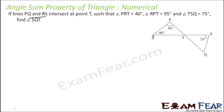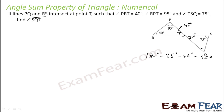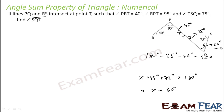Lines PQ and RS intersect each other at point T. Angle RPT is 40 degrees, angle RPT is 95 degrees, and angle TSQ is 75 degrees. We have to find angle SQT. To find this angle, we use the triangle: 180 minus 95 minus 40 equals 45 degrees. This angle is 45 degrees, and by vertically opposite angles, the other is also 45 degrees. So x plus 45 plus 75 equals 180, giving x equals 60 degrees.